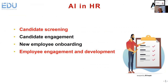As we know, HR is one of the most important processes in our industry, and HR has four main functions: Candidate Screening, Candidate Engagement, New Employee Onboarding, and Employee Engagement and Development. But because of the time limitation, in this presentation we will study only two functions: Candidate Screening, and Employee Engagement and Development.